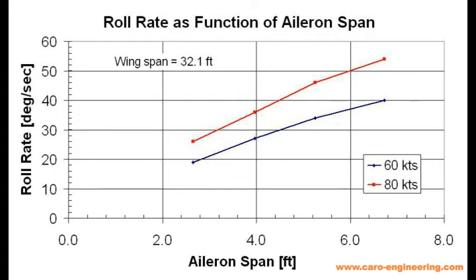You can see that the roll rate which I have plotted here for two different speeds increases nicely with aileron span. Obviously the part of the aileron that is further inboard has less effect than its area at the outboard end, so the roll rate increases not linearly.